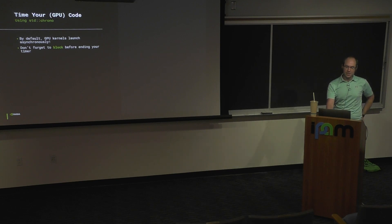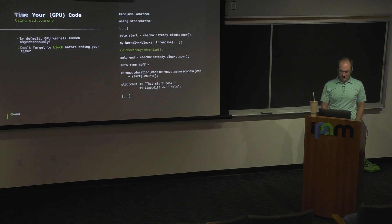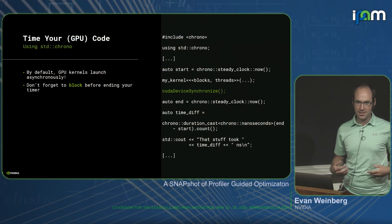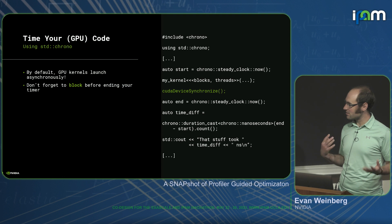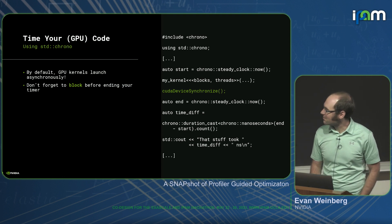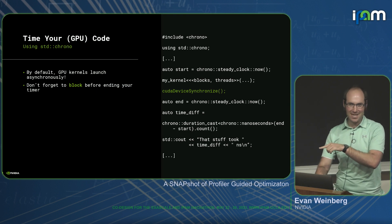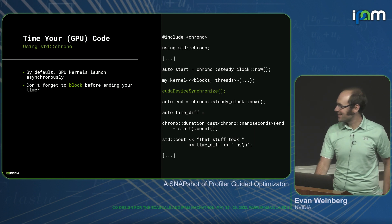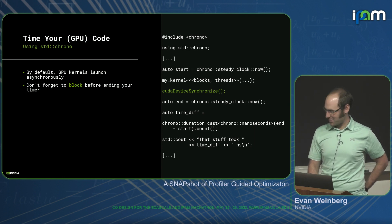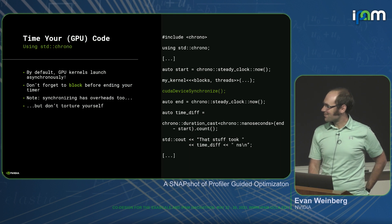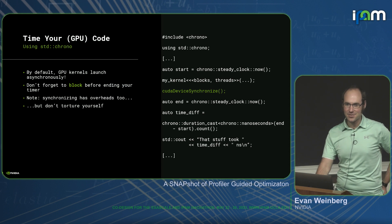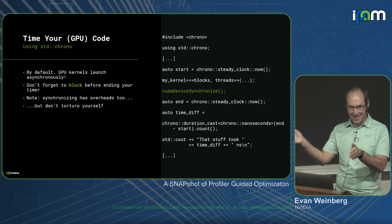Remember, on a GPU, things by default are going to launch asynchronously. So if you're writing CUDA code, stick a device synchronize in there before your timer. Otherwise, you're going to find that kernels take about four microseconds to launch, which is great for that and nothing else. Also, synchronizing has overheads too, but it's additive and it only matters for ratios.